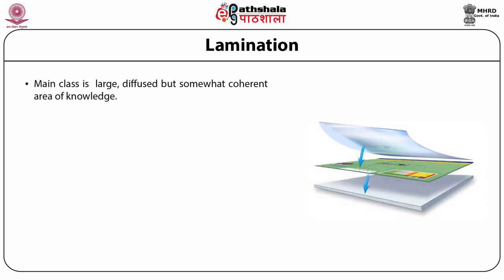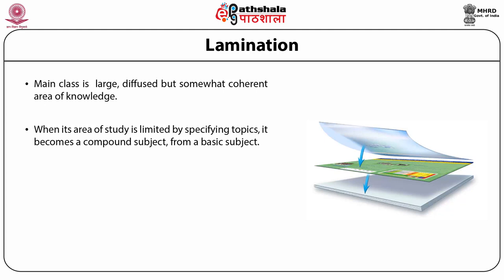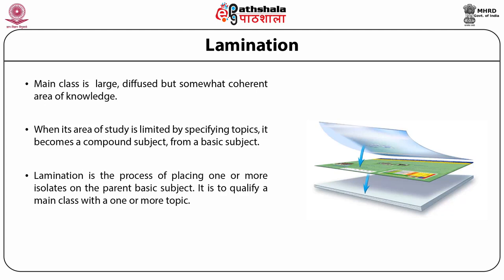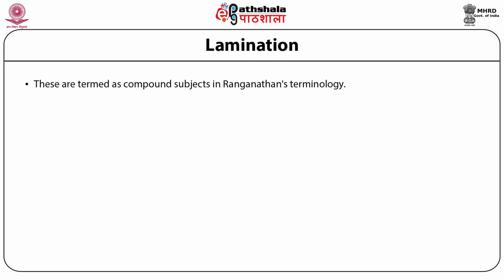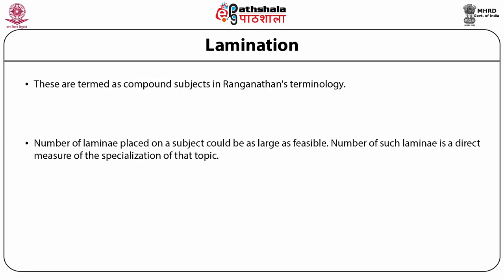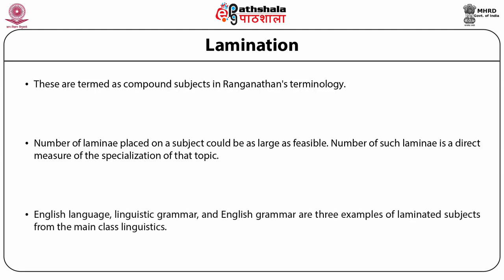Lamination: A main class is a large, diffused but somewhat coherent area of knowledge. When its area of study is limited by specifying topics, it becomes a compound subject from a basic subject. Lamination is the process of placing one or more isolates on the parent basic subject — to qualify a main class with one or more topics or isolates. English language, linguistic grammar and English grammar are three examples of laminated subjects from the main class linguistics. The number of laminae placed on a subject is a direct measure of the specialization of the topic.